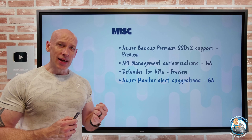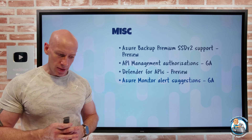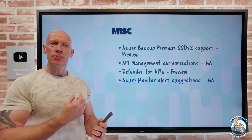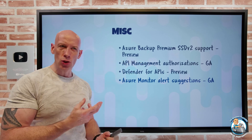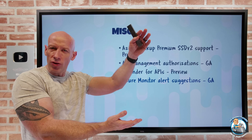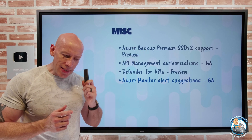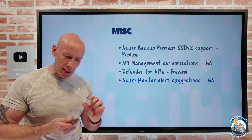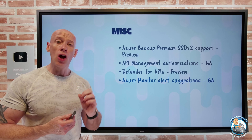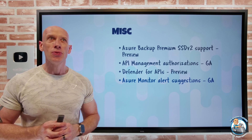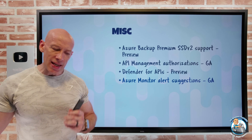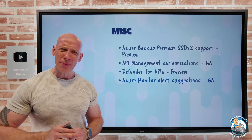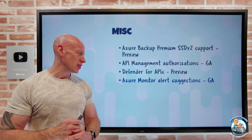Azure Monitor now gives me alert suggestions. Ordinarily I go and create an alert, specify the source signal, and have a huge amount of different things I can do. Now it's going to give me a short list of the most popular signals along with popular conditions, making it a lot easier to get started if I'm not quite sure what the right thing to set up is.